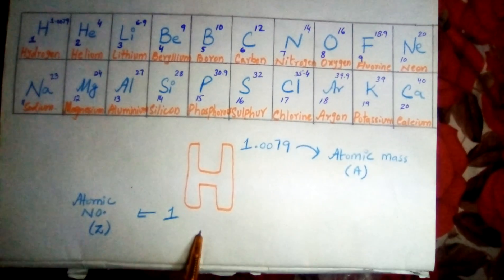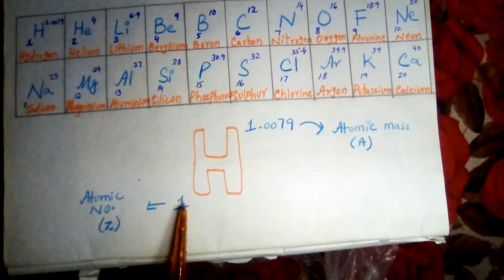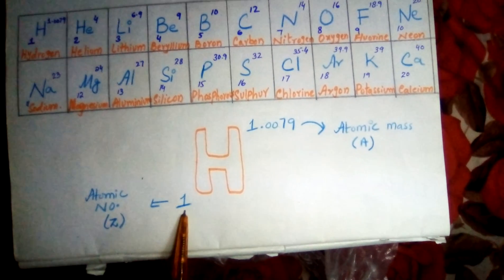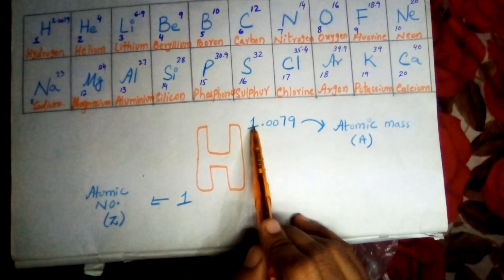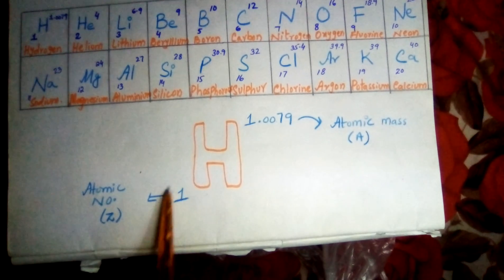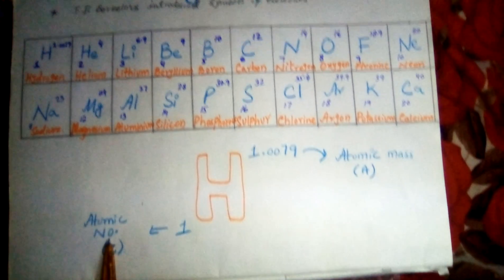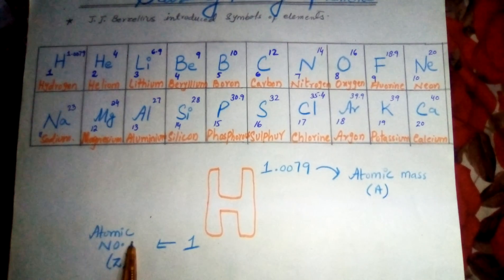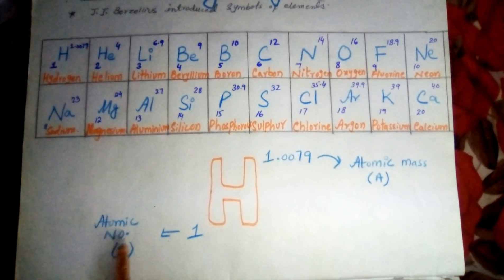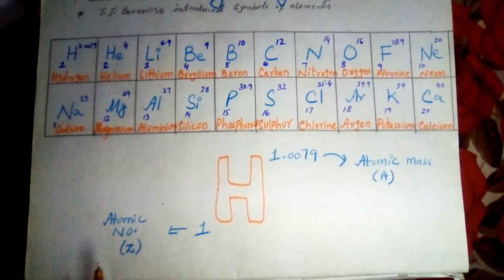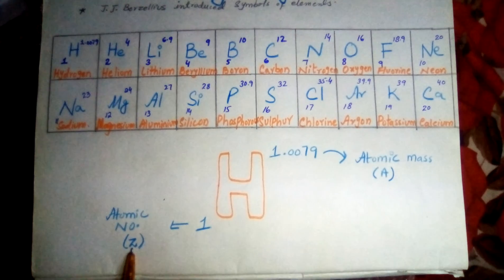You are all looking here at the symbol of hydrogen. Here you can see: first there is a number mentioned — 1 — and here below is 1.0079. The number given below is called the atomic number. The atomic number is actually the number of protons. The number of protons is called the atomic number, represented as Z.